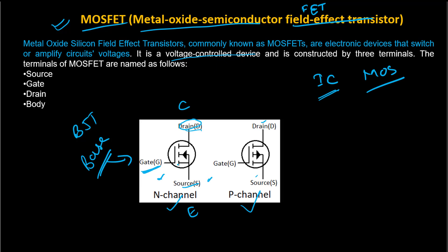For N-channel MOSFET, the arrow points in the inward direction. For P-channel, the arrow points in the outward direction. The Metal Oxide Semiconductor Field Effect Transistor is an electronic device that can switch or amplify circuit voltage. It works as a switch and amplifies voltage. This is our voltage control device with three terminals: source, gate, and drain. This is our body area.